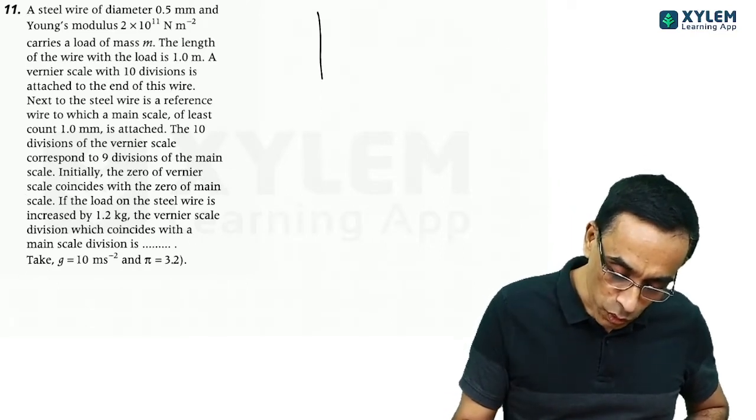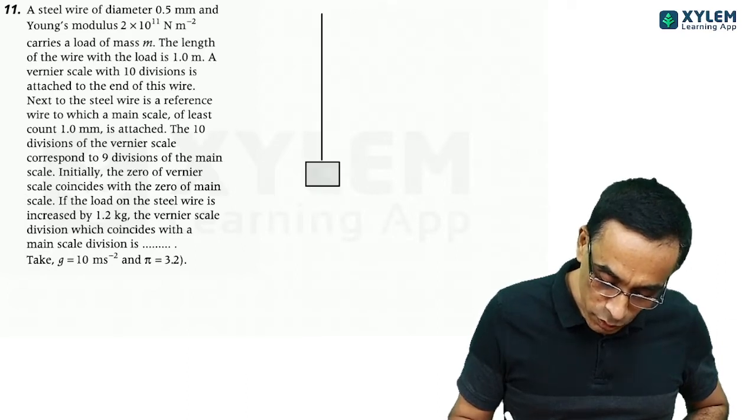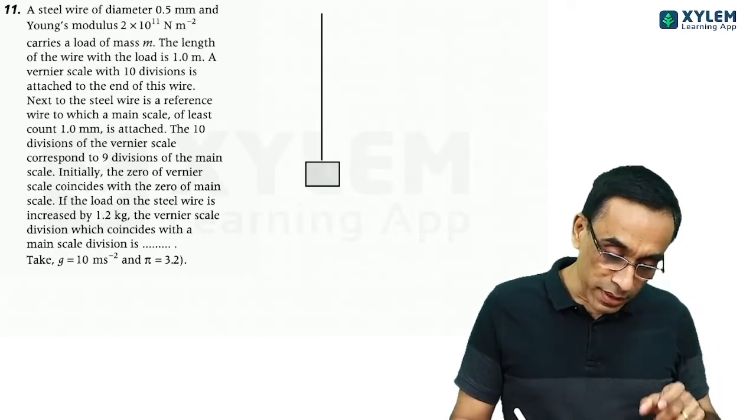Here we go to the end of this wire. One wire. The mass is attached. This length is 1 meter.